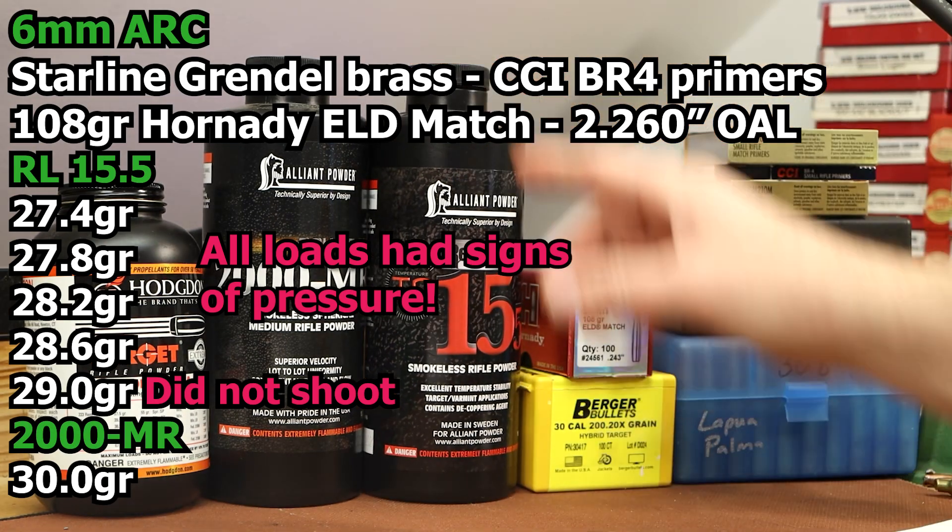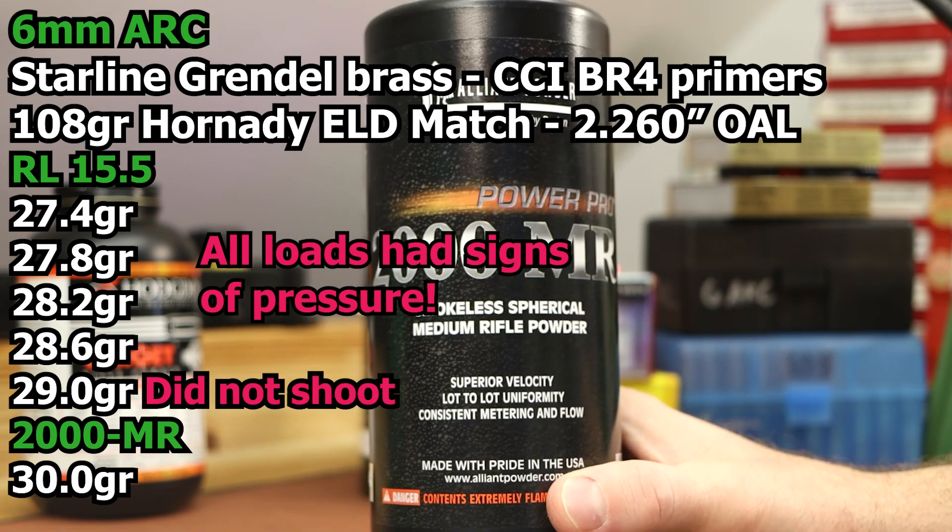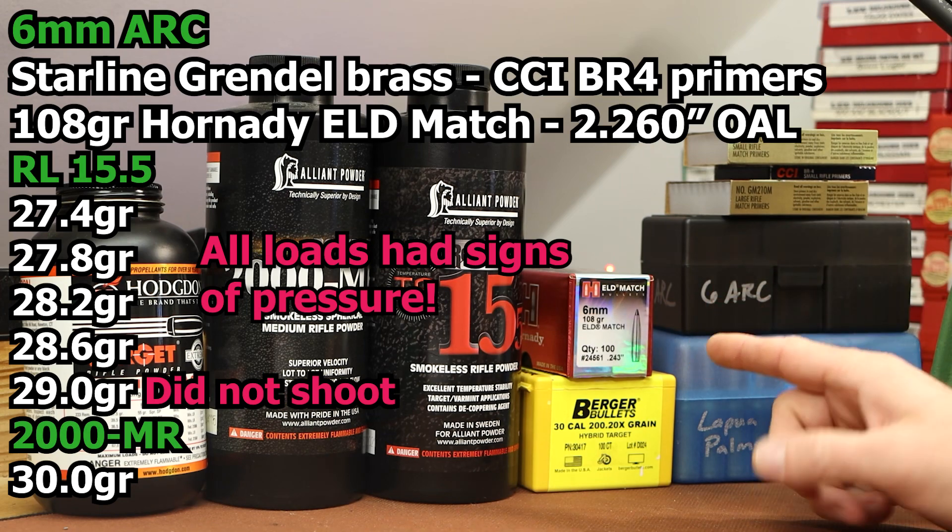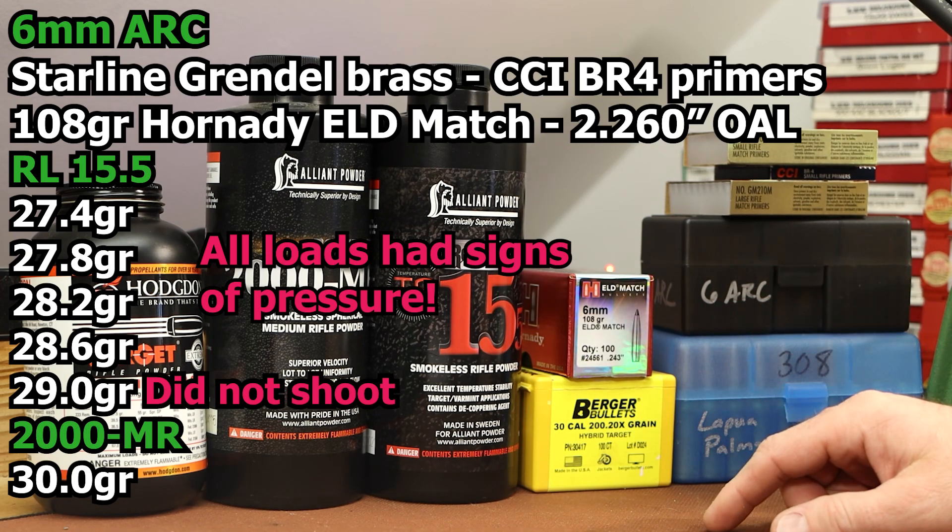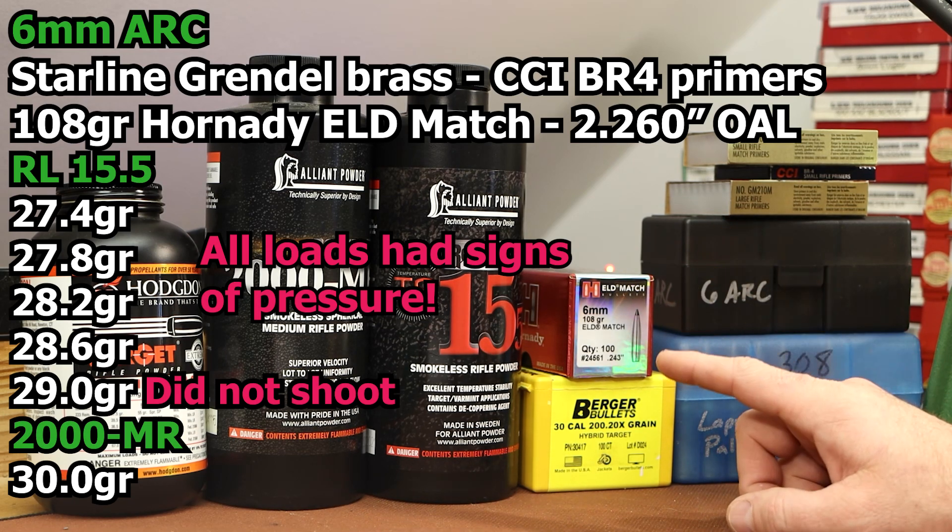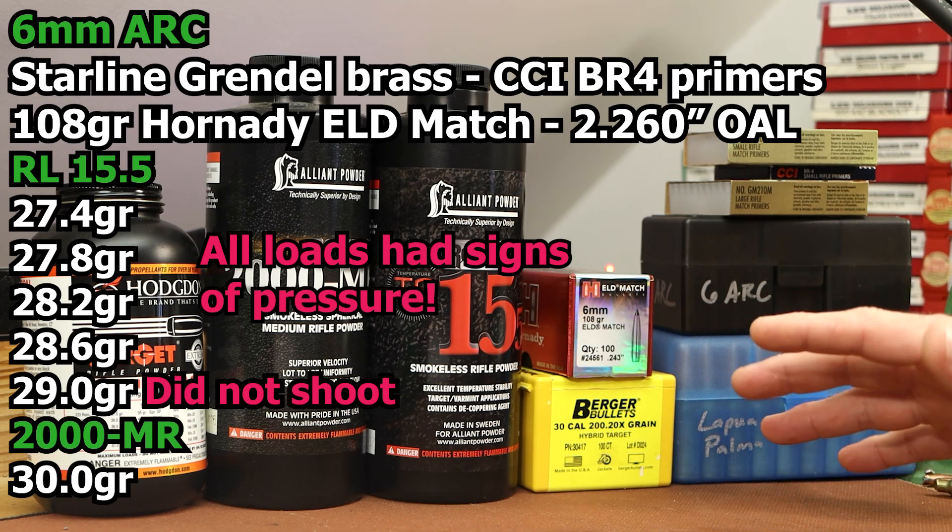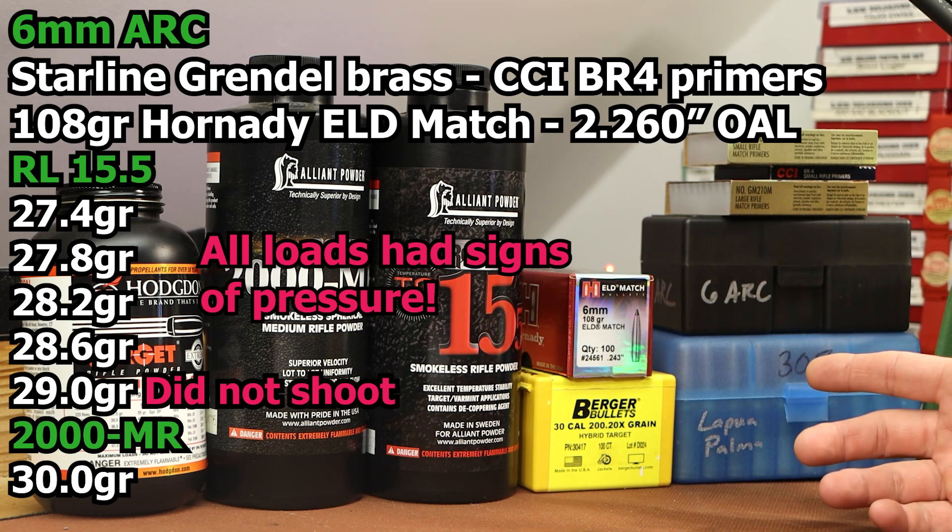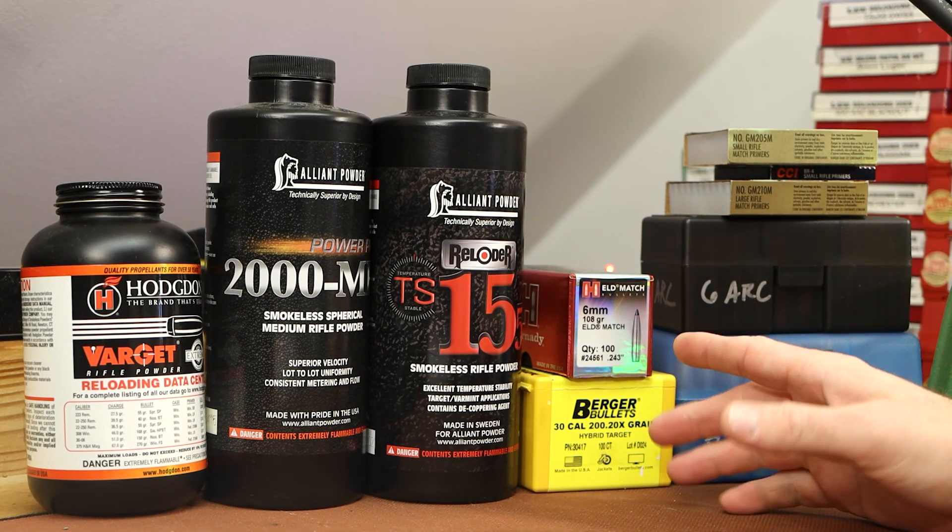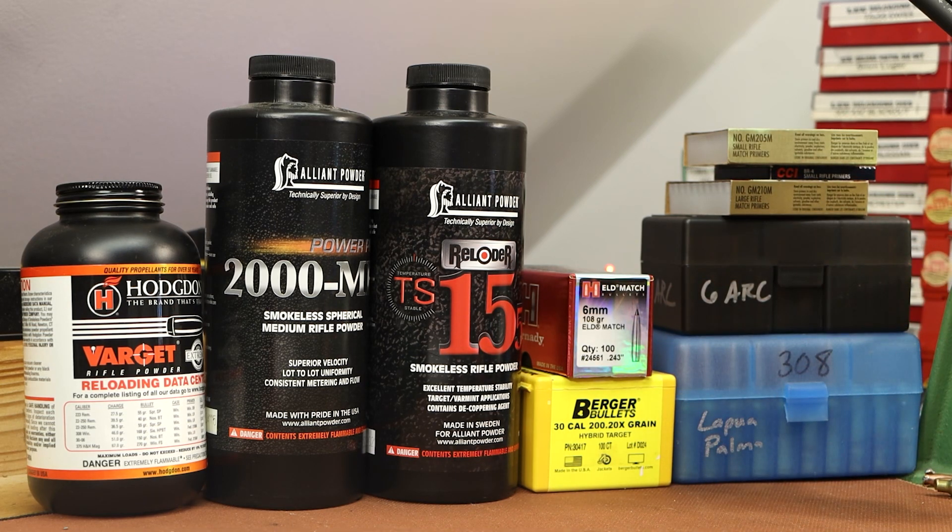As a comparison in six ARC we're going to shoot PowerPro 2000 MR. I just loaded up five rounds with 30 grains of PowerPro 2000 MR. Overall length we're going to shoot 2.260 standard AR magazine length, and that puts us about 20 thousandths off the lands. That's a change - when I first got this barrel we had to shoot this bullet down at 2.24 to make sure it fit, but now that my throat is eroding we're hitting the lands at around 2.280.